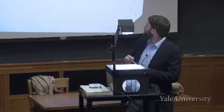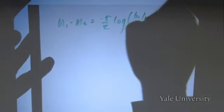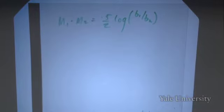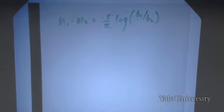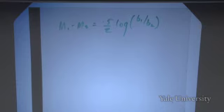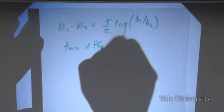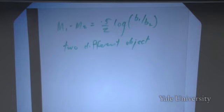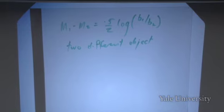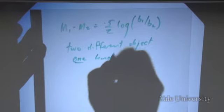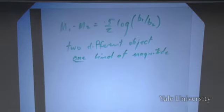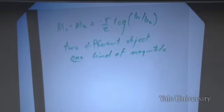There are a couple of magnitude equations. The first relates magnitudes of two different objects to each other. It can be used for either kind of magnitude — either absolute or apparent magnitude — just so long as you don't mix them. So it's two different objects, but only one kind of magnitude. Depending on which kind, you use this brightness ratio: either the ratio of how bright it looks, or the ratio of how bright it is.